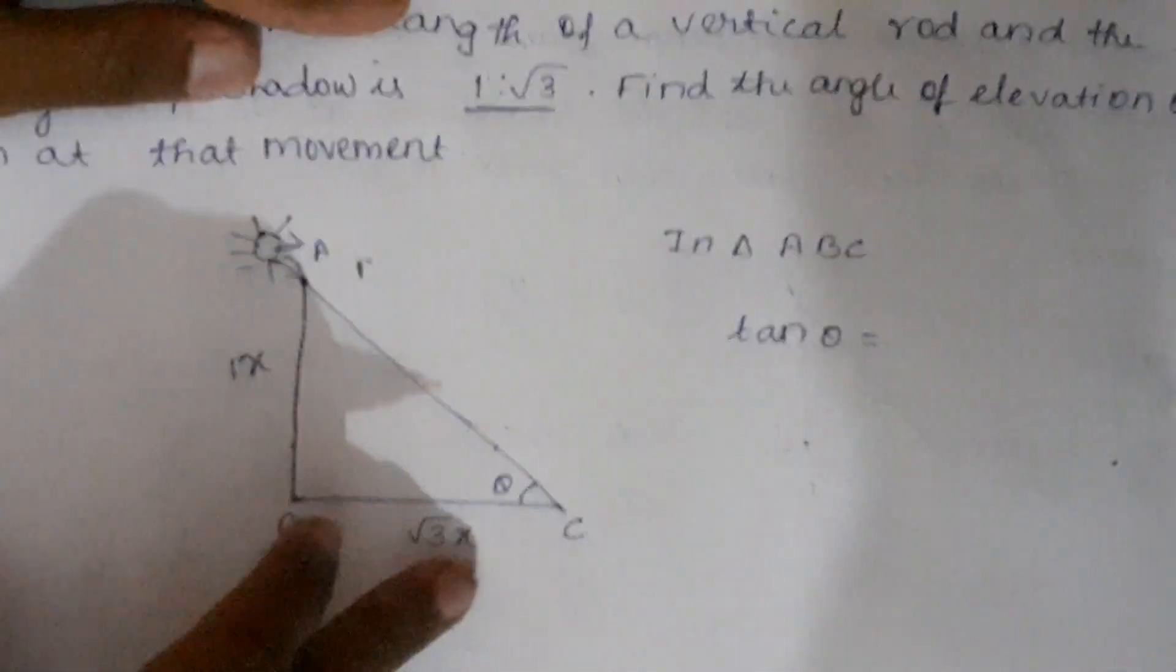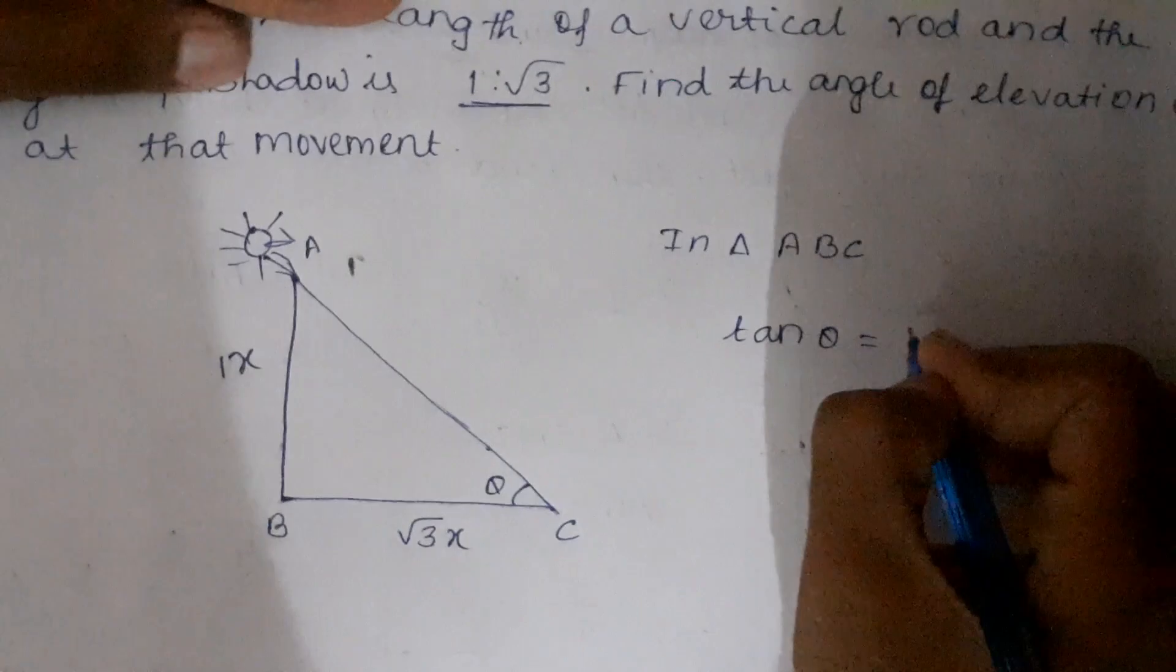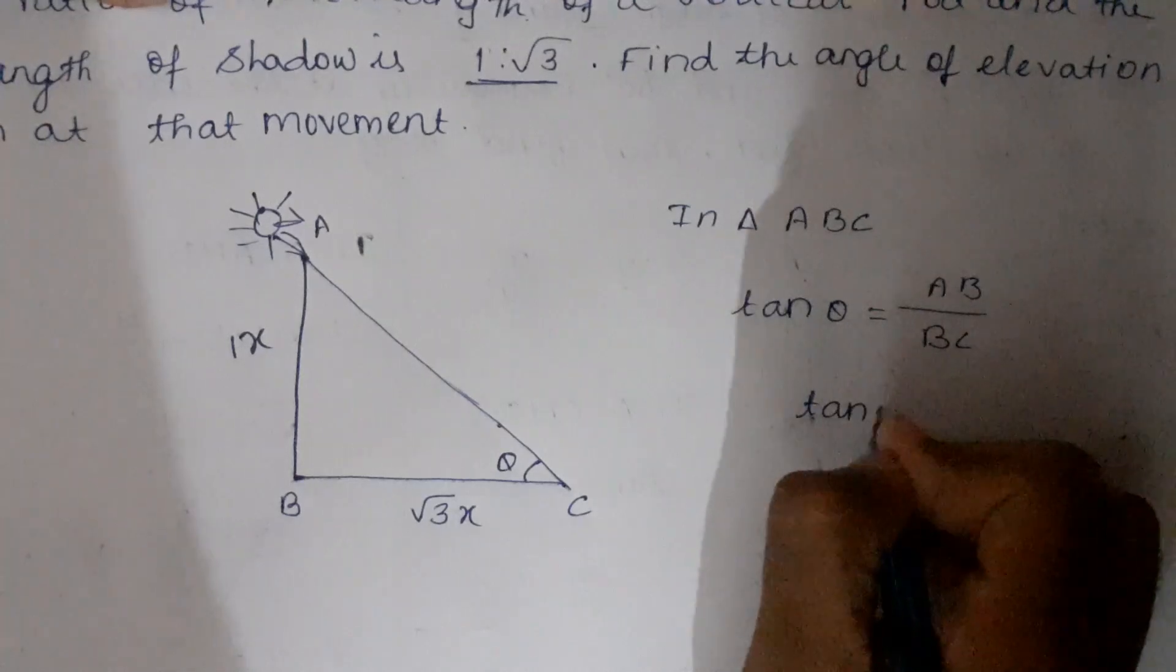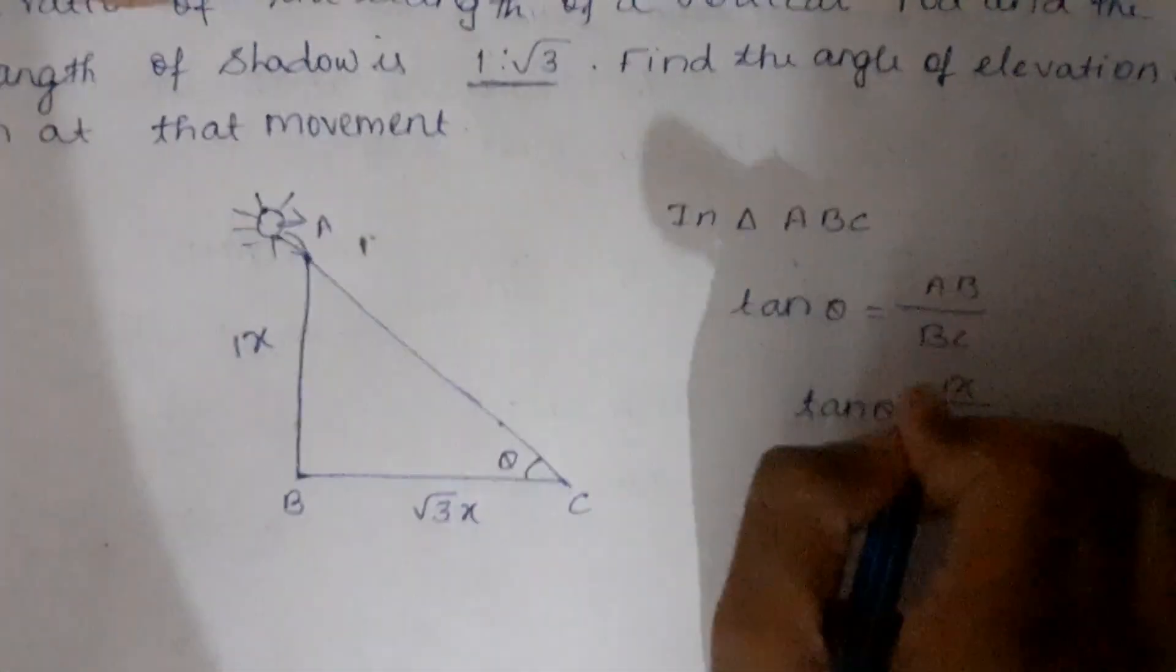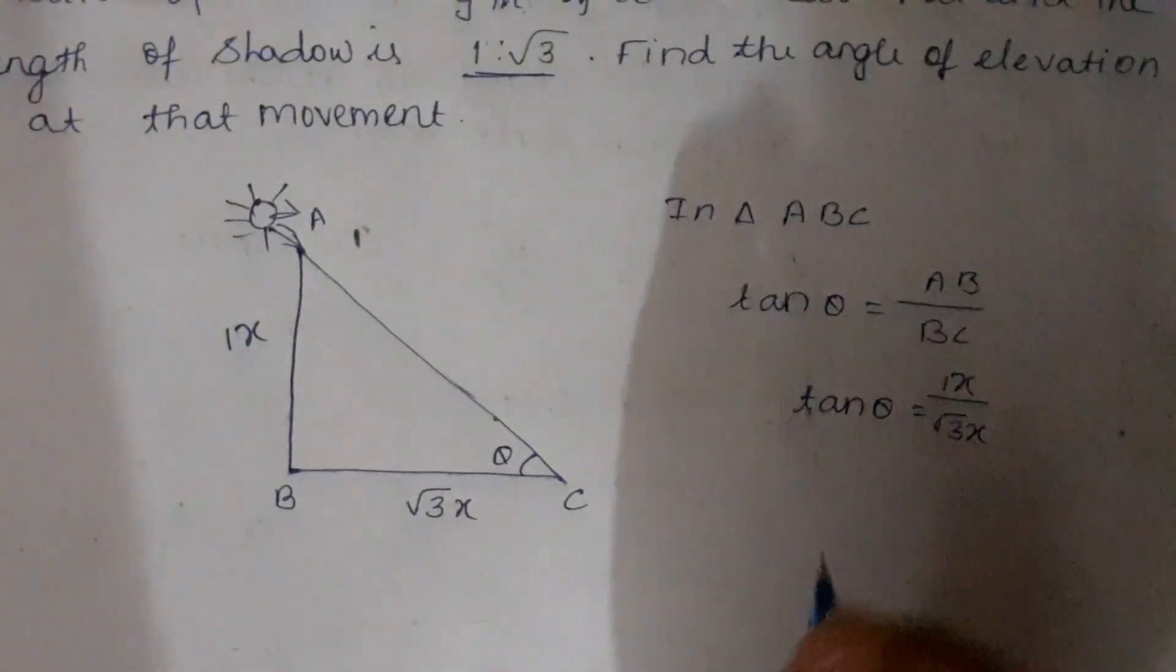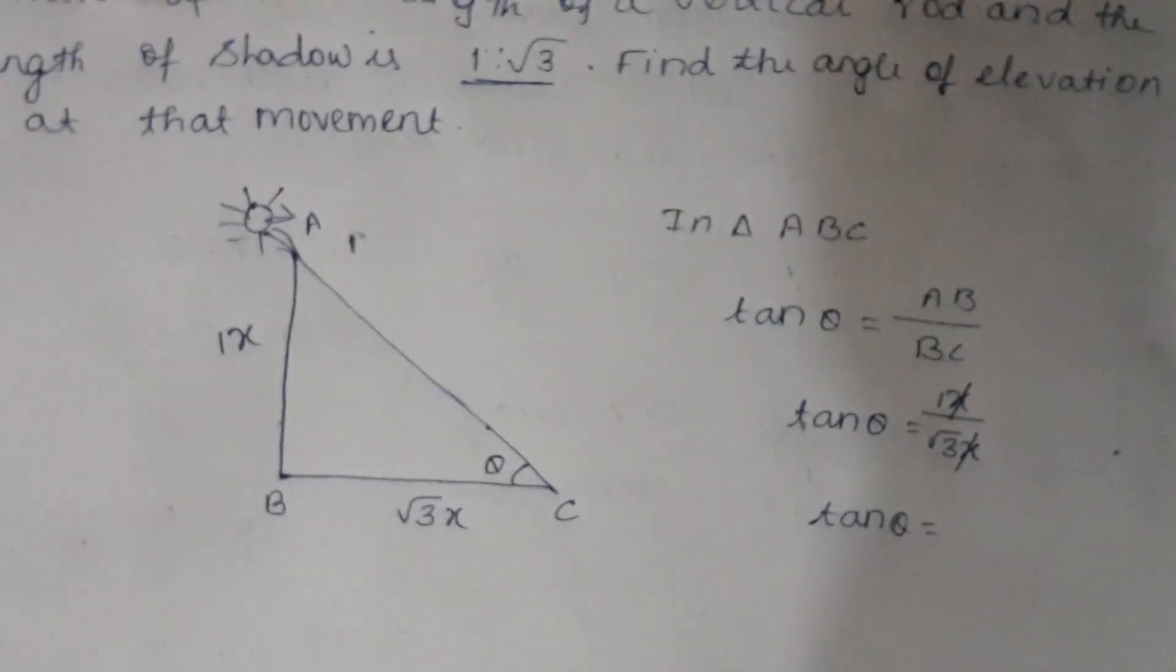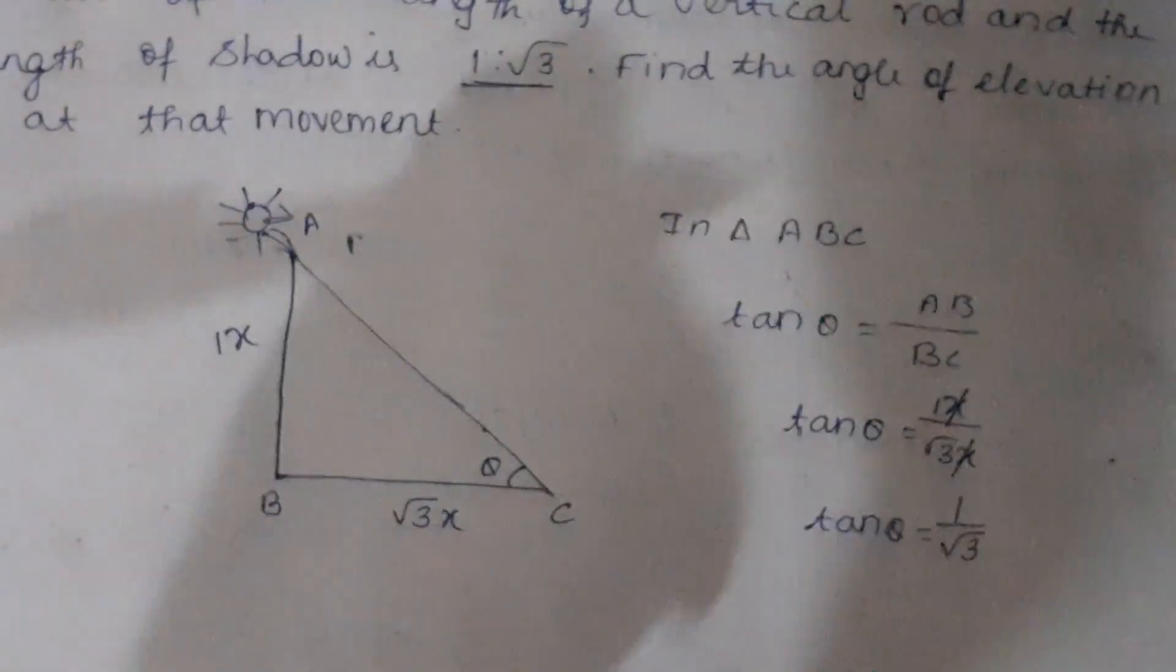The opposite side is AB and the adjacent side is BC. So tan theta equals AB by BC. The value of AB is 1x and BC is root 3x. Tan theta equals 1x by root 3x. X and x get cancelled, so tan theta equals 1 by root 3.